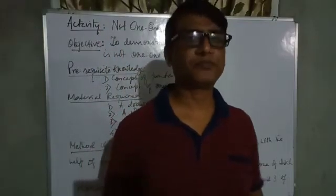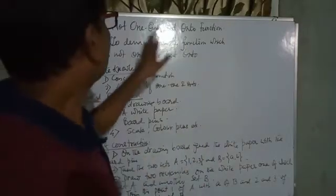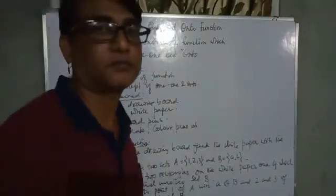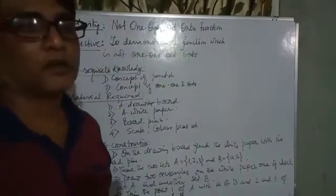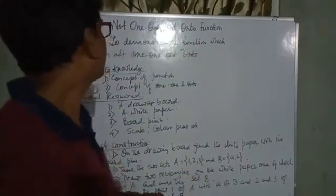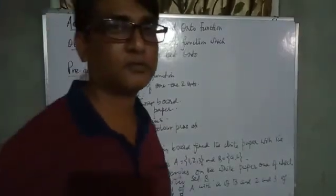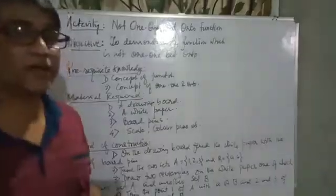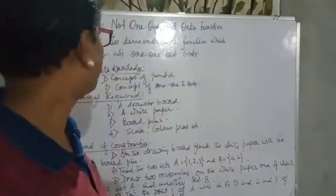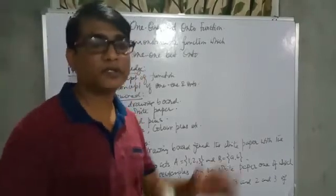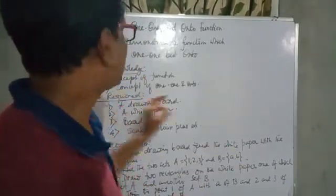The activity is: 'Not one-one but onto function.' That is our activity. The objective is to demonstrate a function which is not one-one but onto.